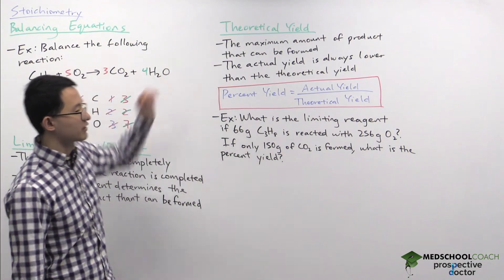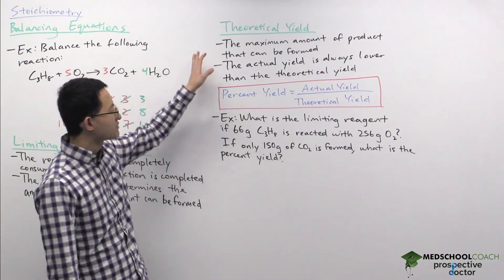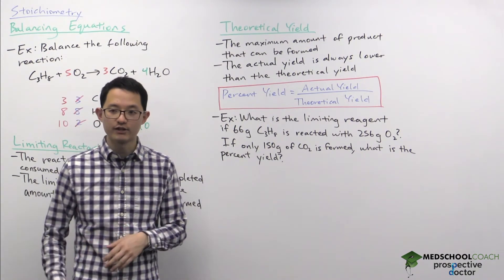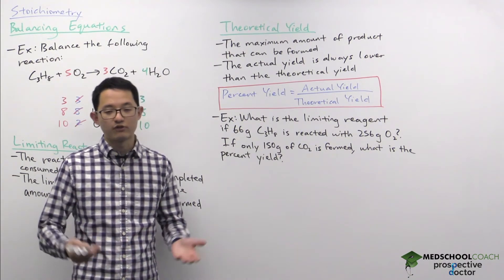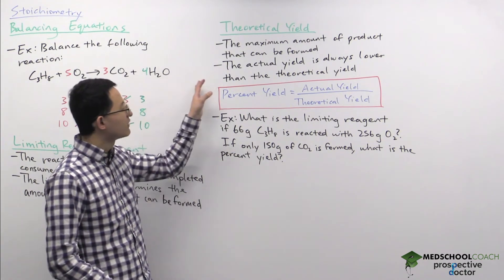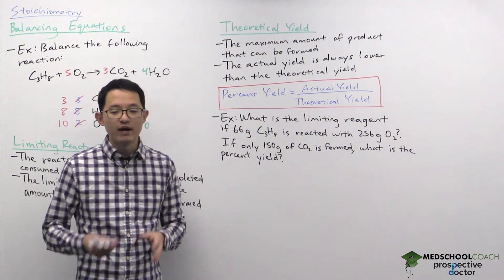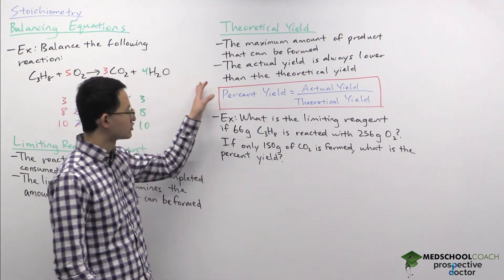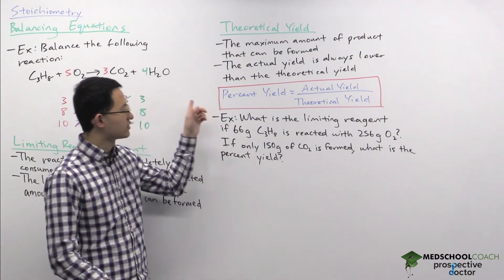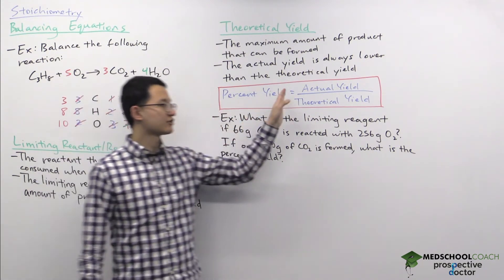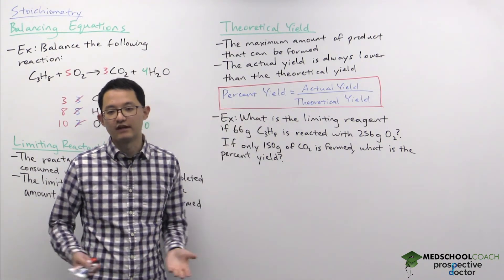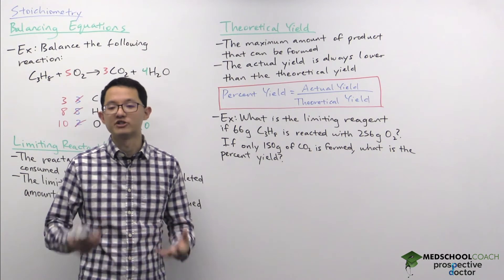Next, we can look at theoretical yield. Theoretical yield is the maximum amount of product that can be formed, and it's calculated using the limiting reagent. In theory it describes the maximum product possible, but in reality we never actually produce that much. The amount we actually produce is called the actual yield. Since actual yield is always less than theoretical yield, we often calculate the percent yield, which is simply the actual yield divided by the theoretical yield, giving you a percent value telling you how much of the theoretical yield you actually obtained.